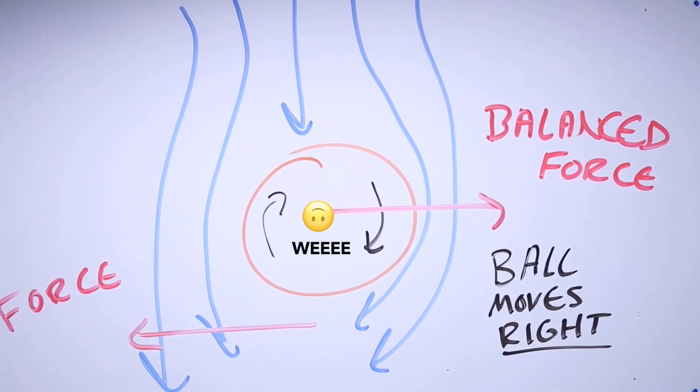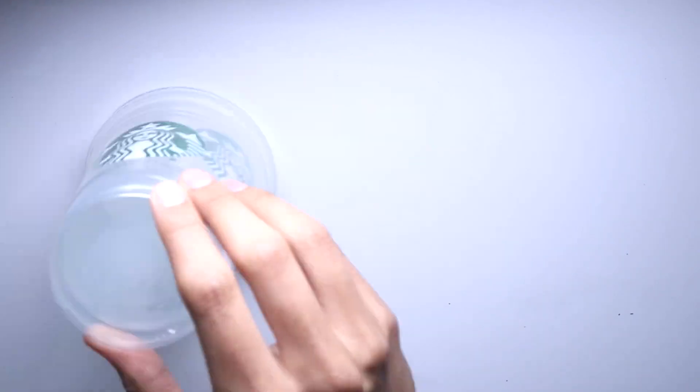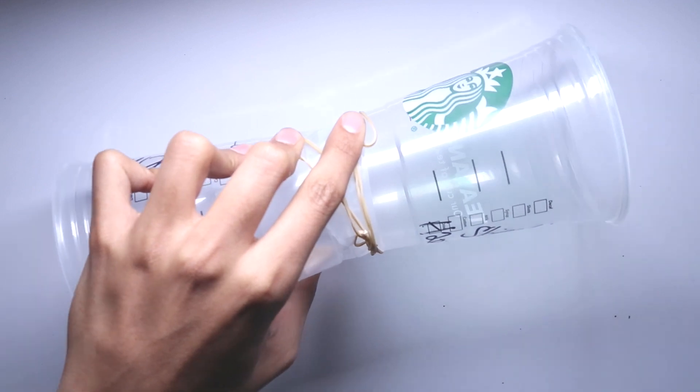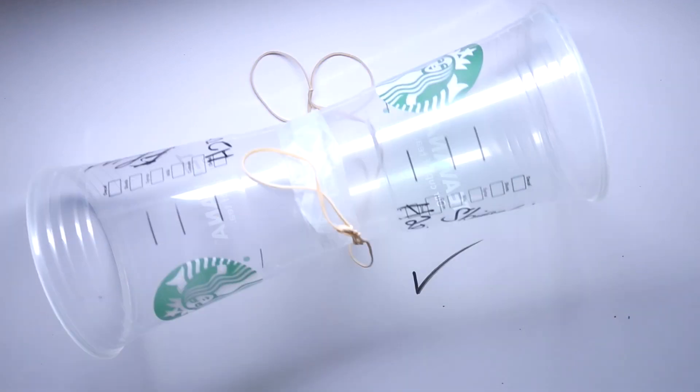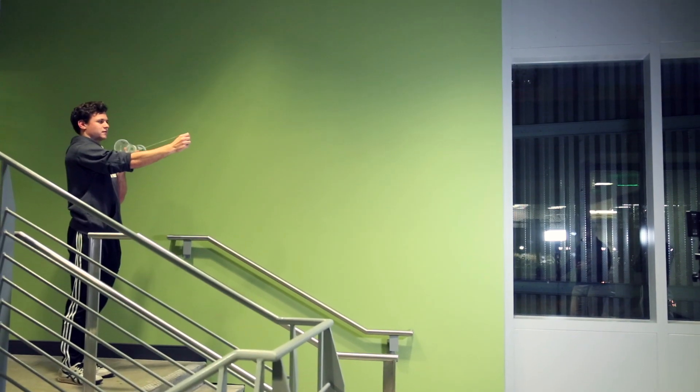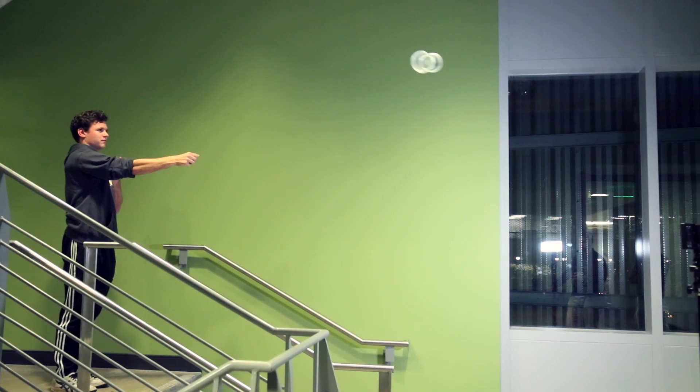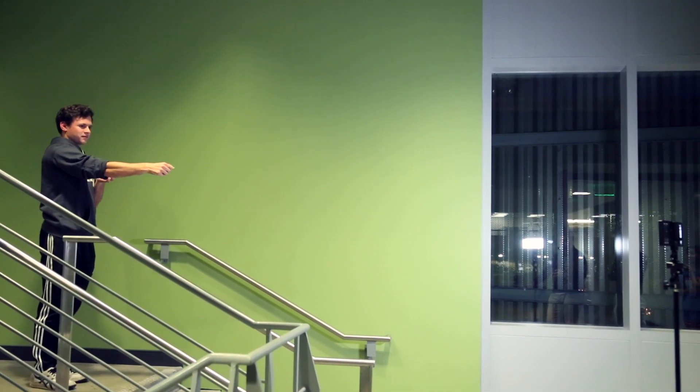Because the idea behind the Magnus effect intrigued us so much, we decided to prove it ourselves. We made a floating cup contraption to show the Magnus effect. In the experiment, once the rubber band was released, the Magnus effect caused the cups to float in the air as they continued spinning.